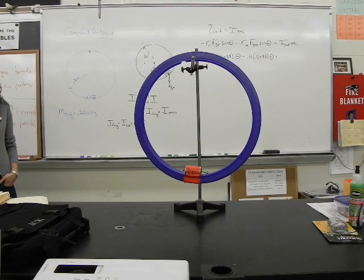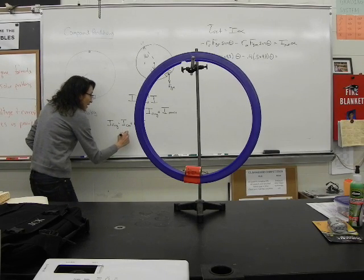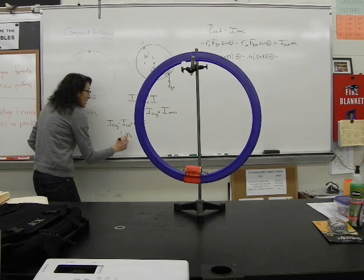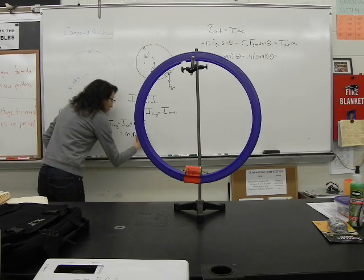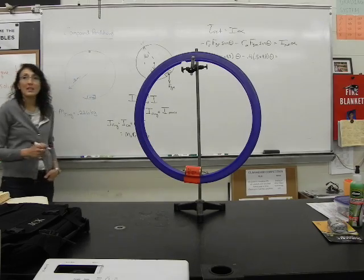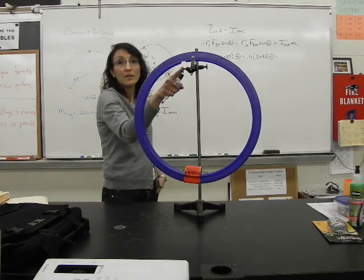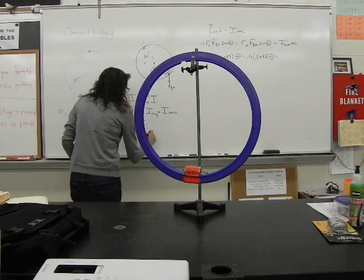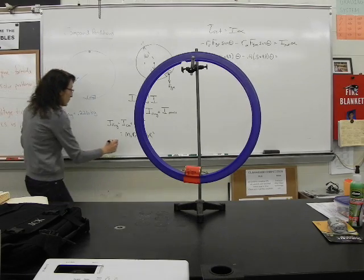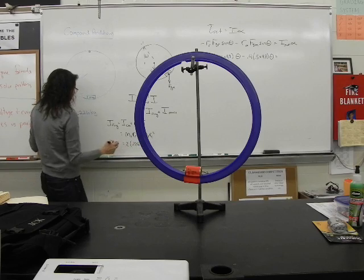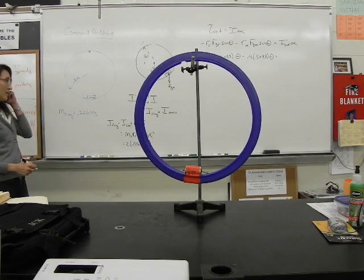The parallel axis theorem gives me the I about the center of mass is the mass of the ring times the radius of the ring squared plus the mass of the ring. And what is d in this case? How much have we shifted from the center of mass to this point? The radius again, right? So we end up with the radius of the ring all squared. So that's going to be 2 times 0.226 times 0.2 all squared.